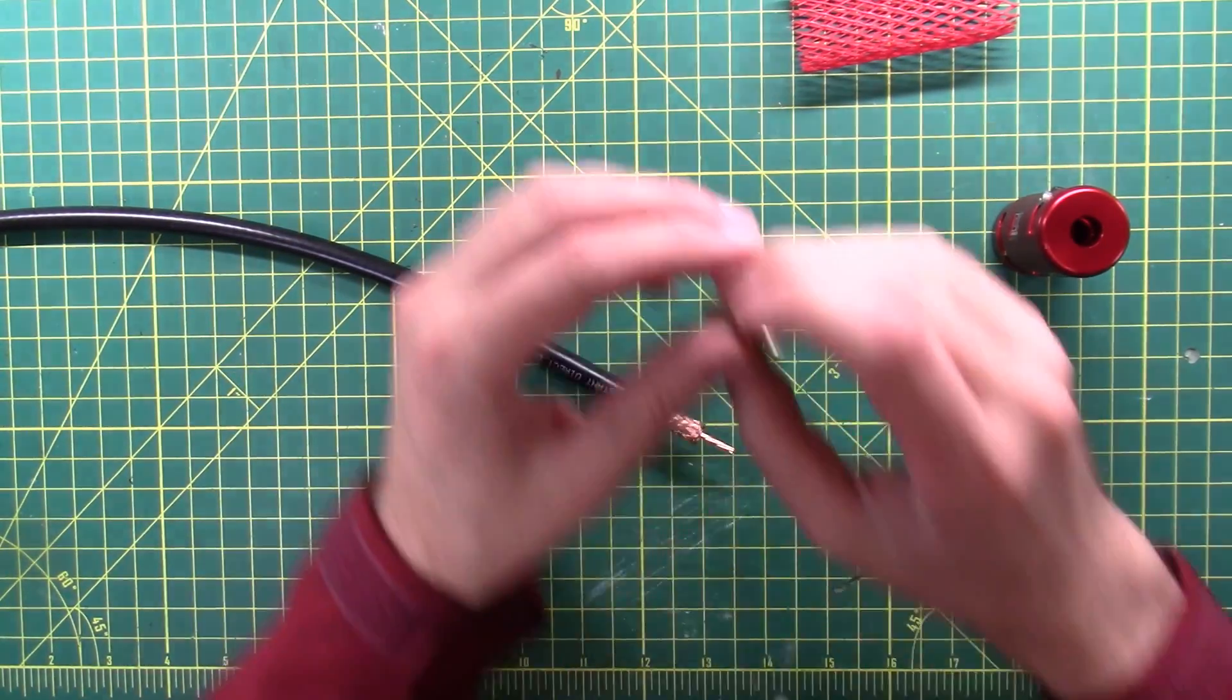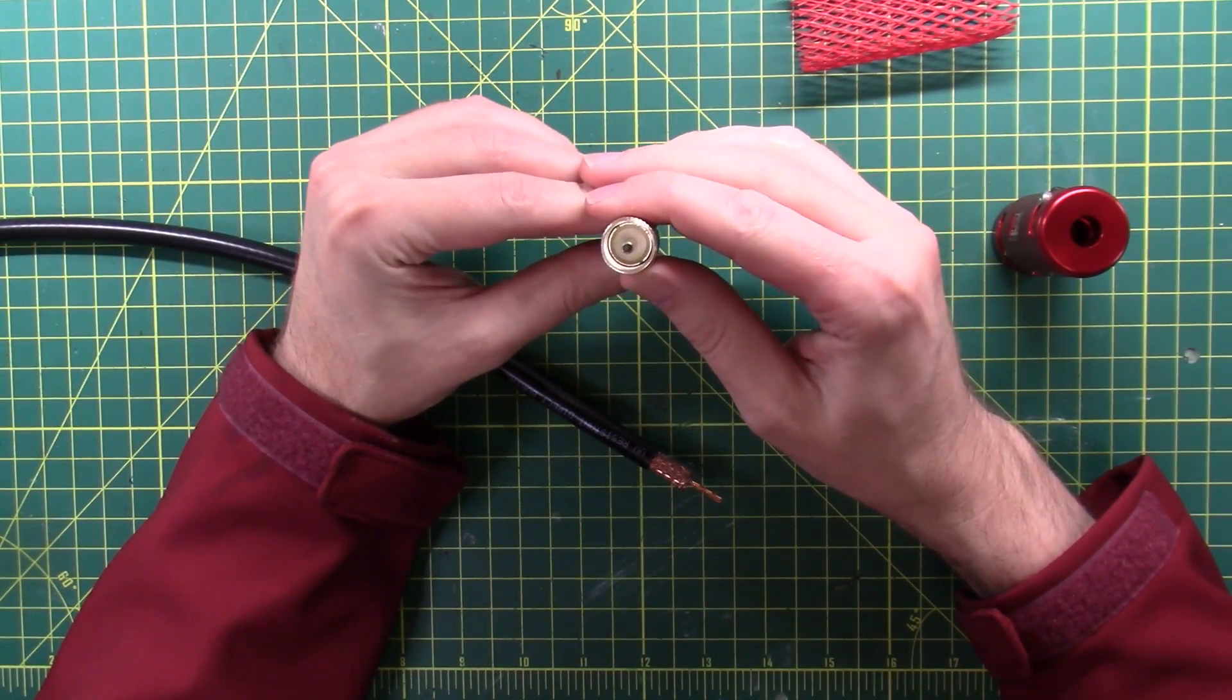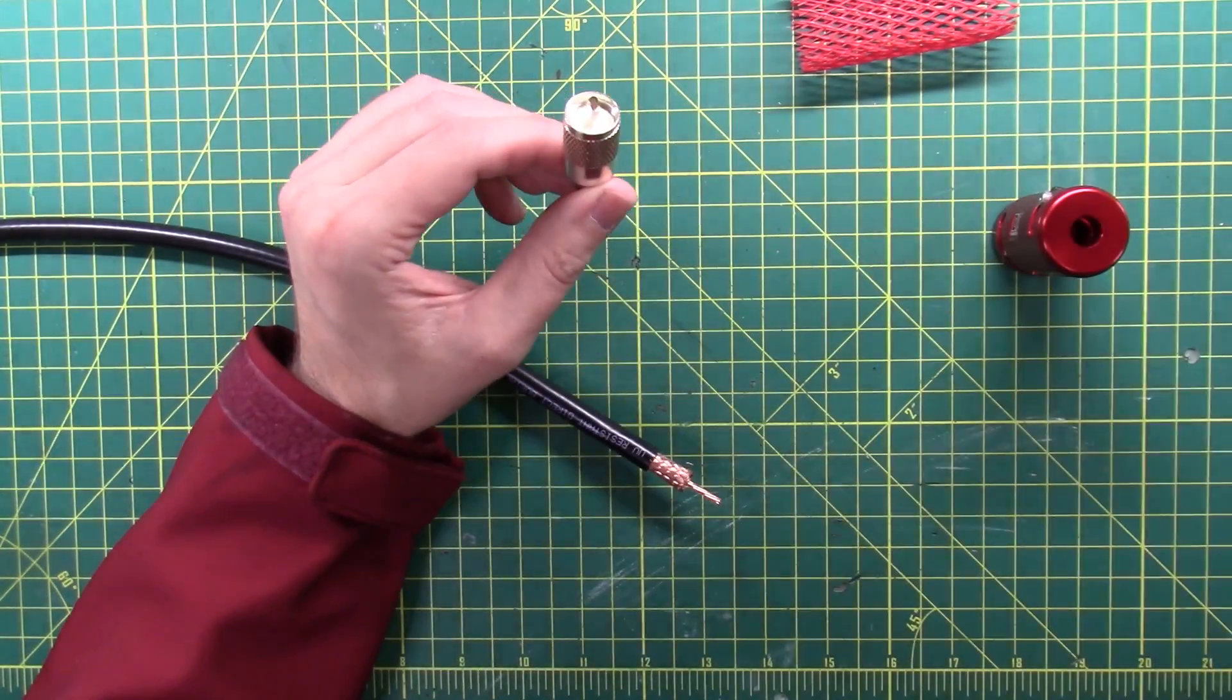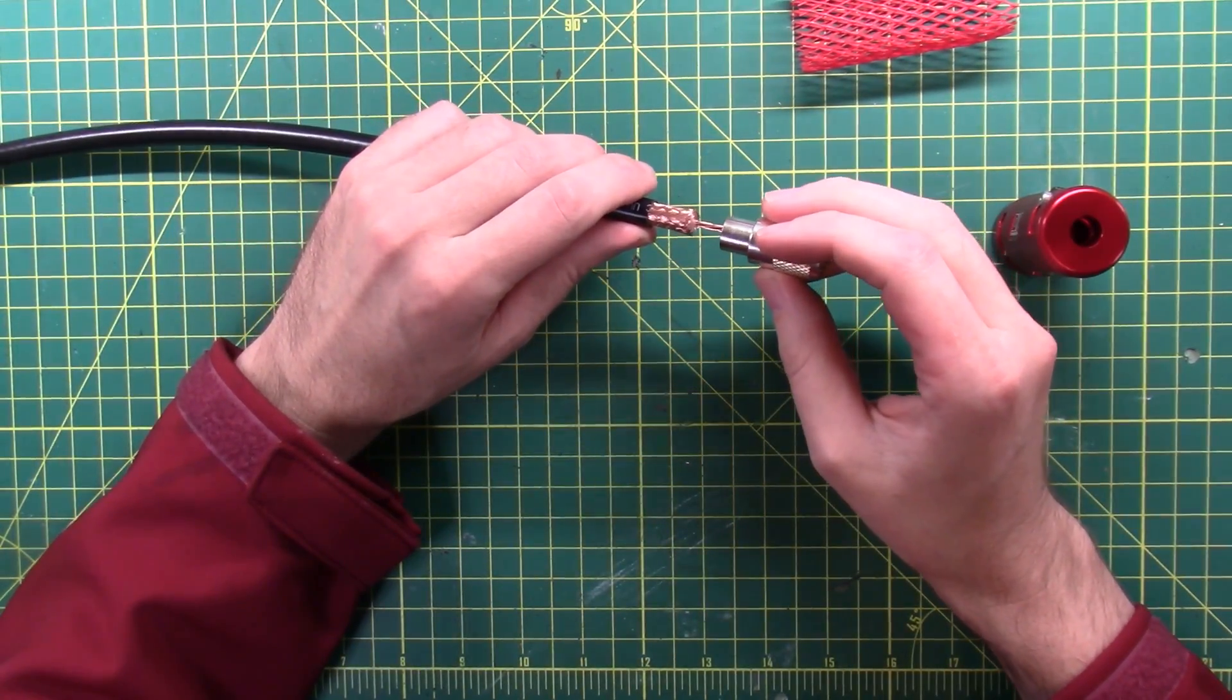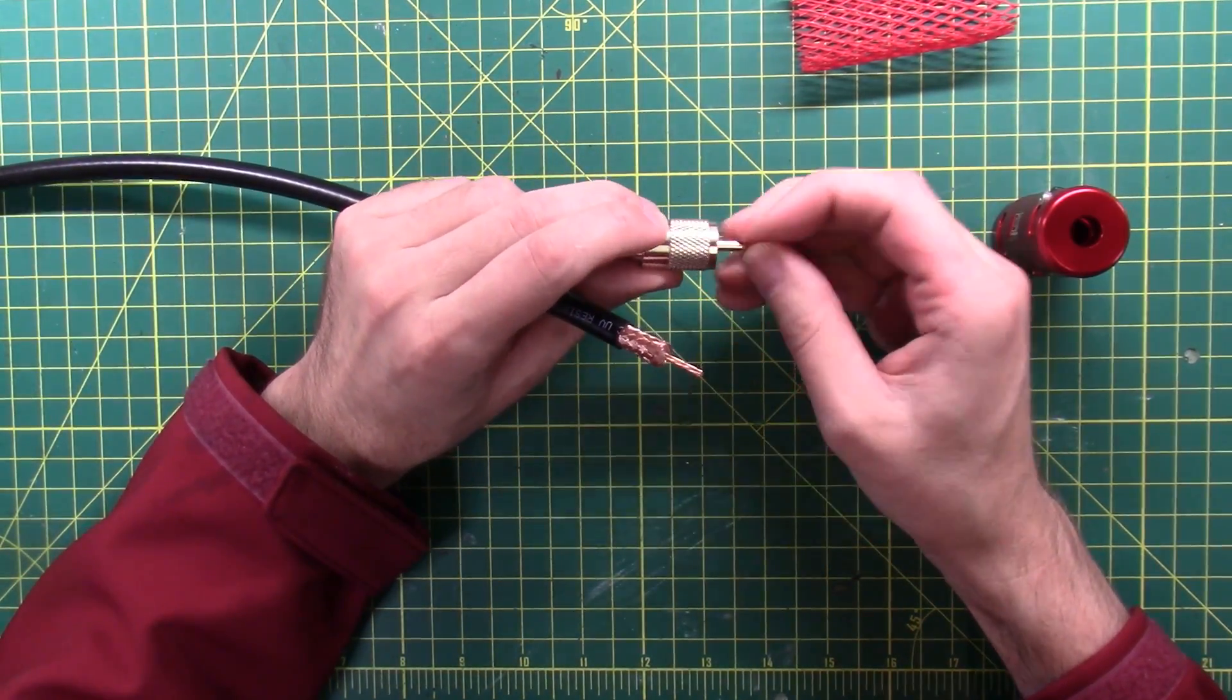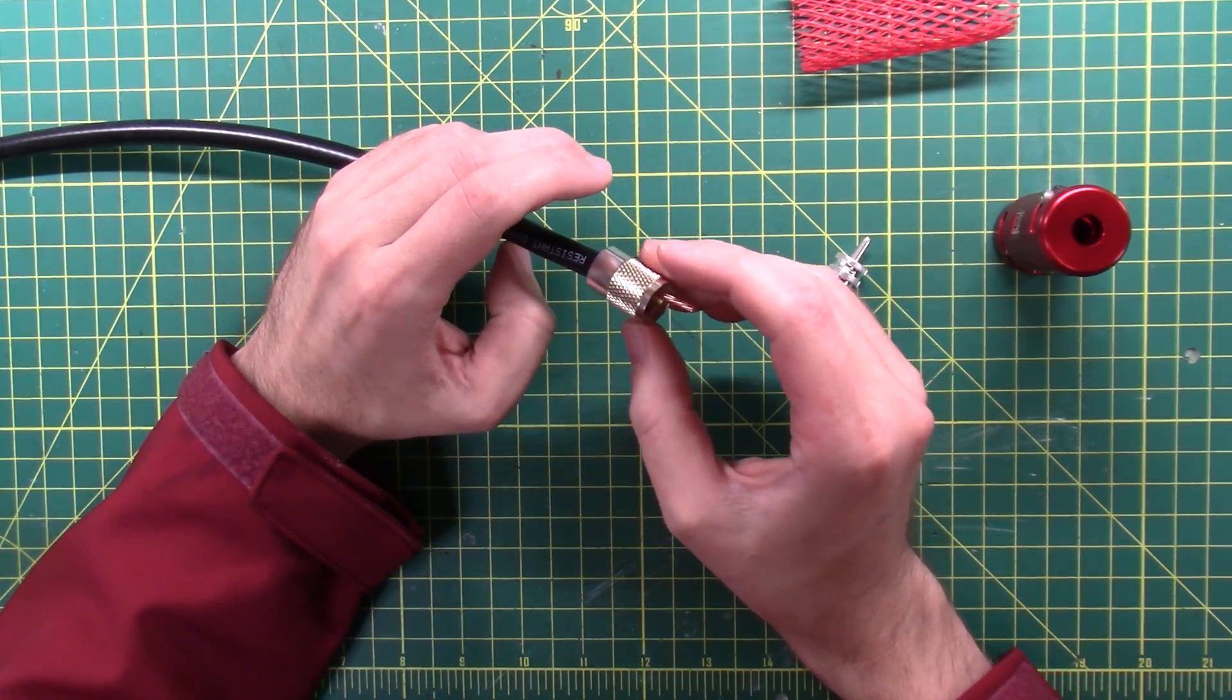Next up, we need a connector. And the way these are designed, you can see all the way through to my green desk mat, if I get it lined up just right. So the center conductor needs to go in there, and then we need to solder it in place. I'm going to put this on without making any changes first. Let me take this piece out. Connector unscrews.